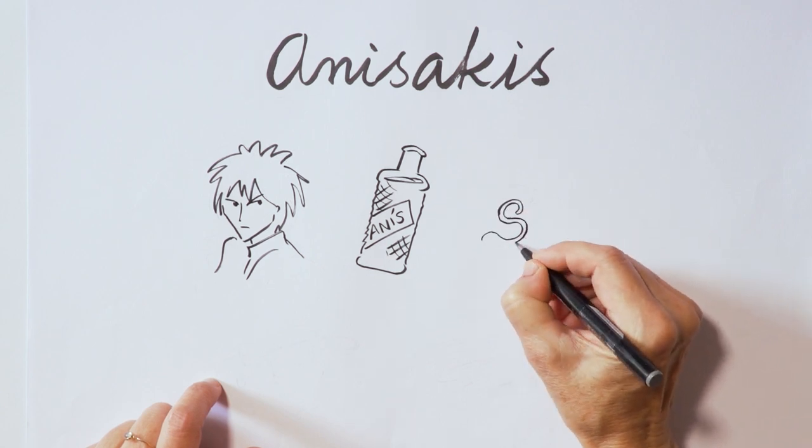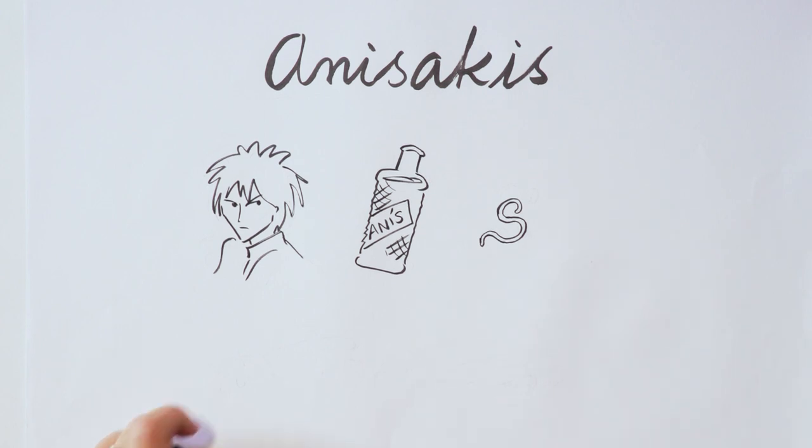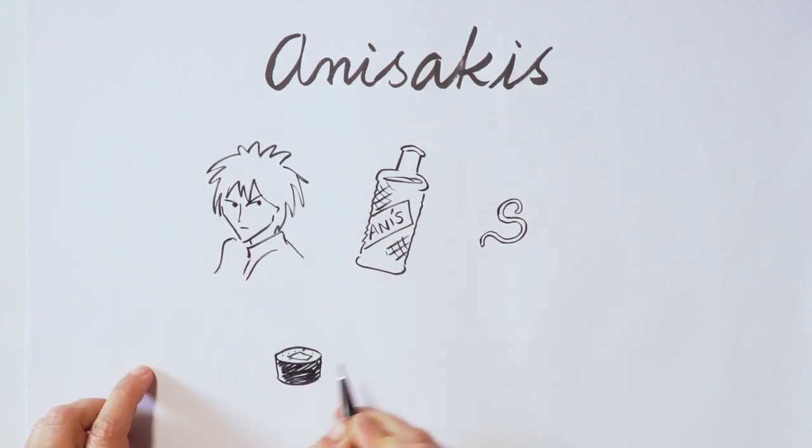It's a thin cylindrical kind of worm called a nematode. And why do we need to be concerned with anisakis?